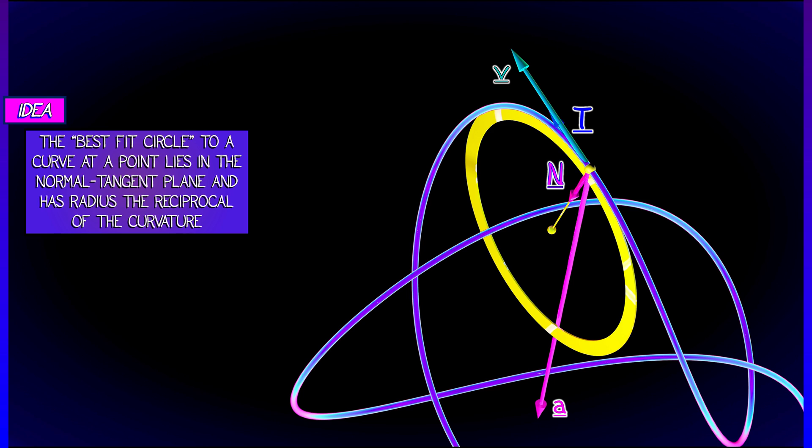The unit tangent vector is telling you something about the best fit line to a curve. Whereas the curvature and the unit normal vector are telling you something about the best fit circle to a curve. This is a little reminiscent of things that we did in Taylor series with higher order approximations.